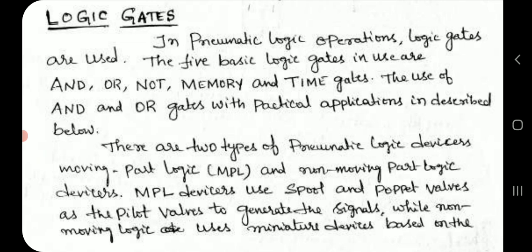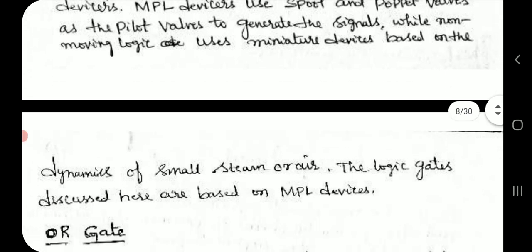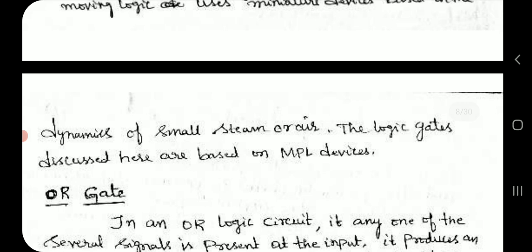The use of AND and OR gates with practical applications is described below. There are two types of pneumatic logic devices: moving part logic and non-moving part logic devices. Moving part logic devices are spool and poppet valves that use pilot valves to generate the signals, while non-moving part logic uses miniature devices based on the dynamics of small steam or air.